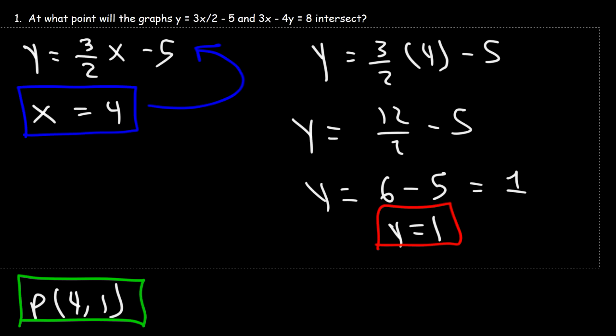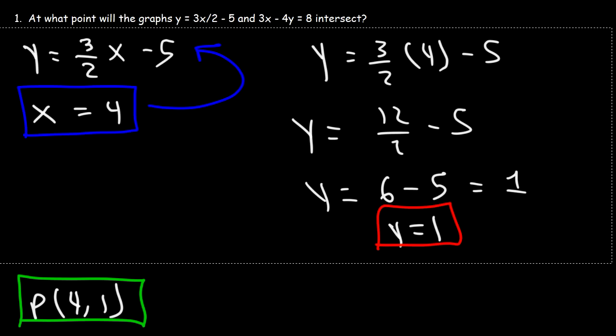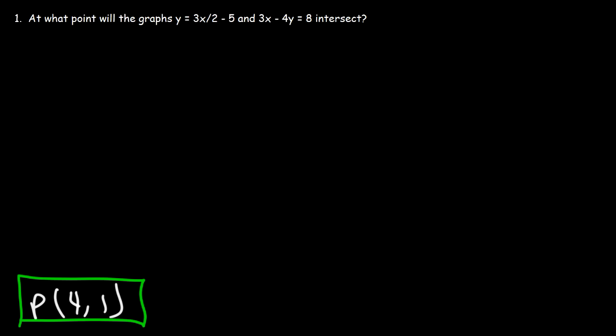Now what we're going to do is we're going to confirm this answer graphically. Now before we do so, this equation is in standard form. It's in ax plus by equals c format. And it's better if we convert it to slope-intercept form, which is in y equals mx plus b format. So let's isolate y in that equation.